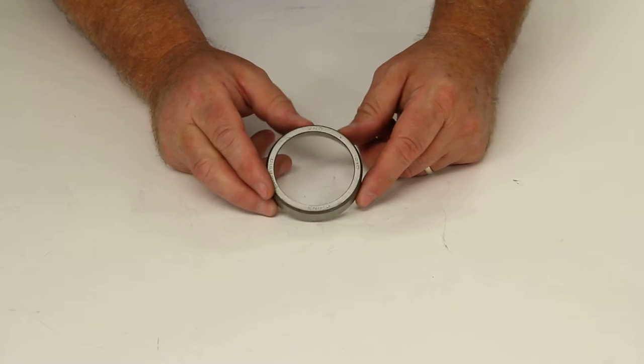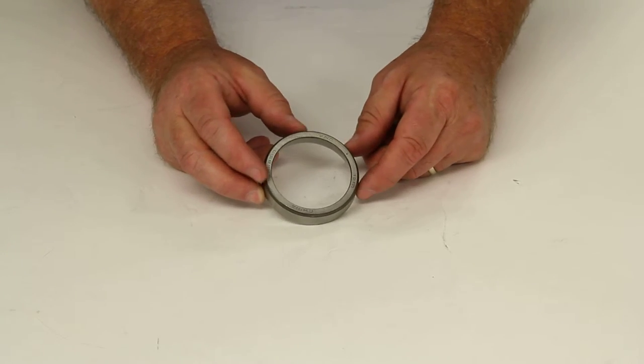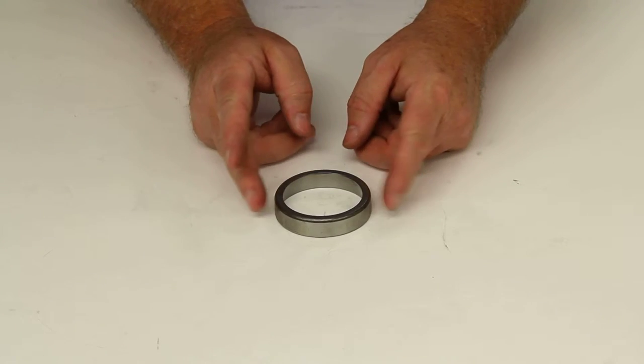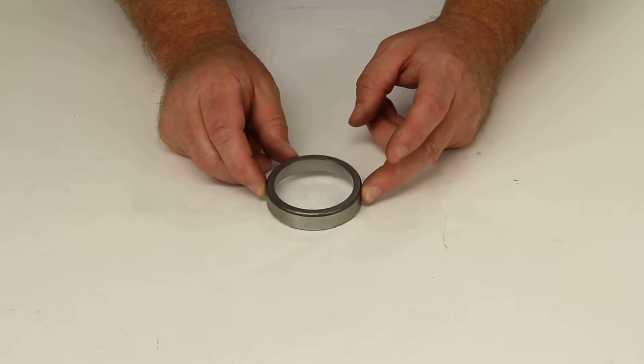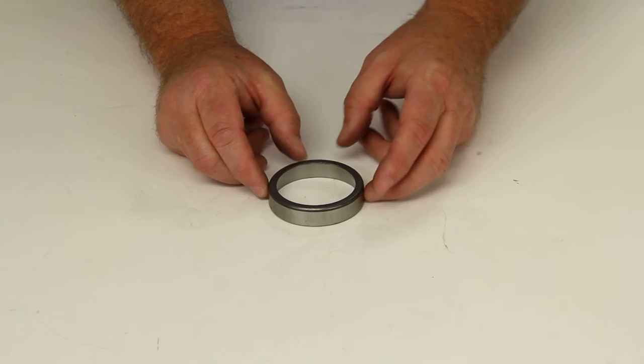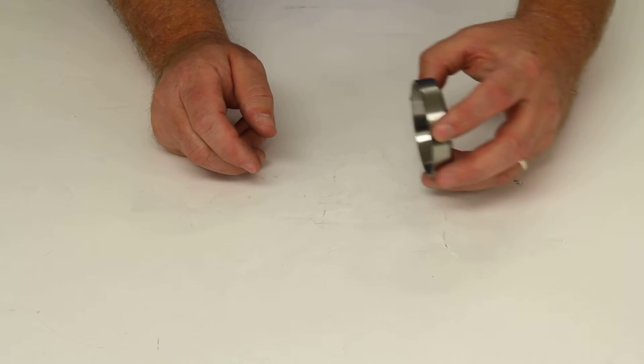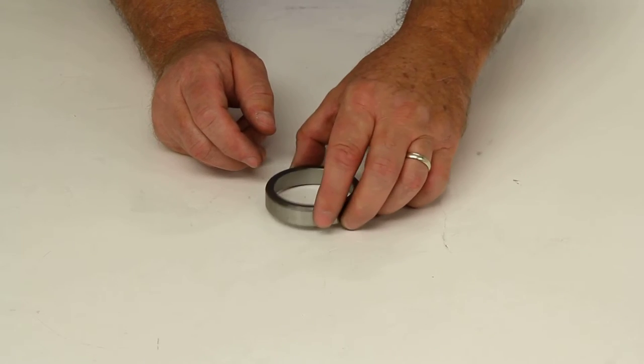The most critical thing to remember on this is the outer diameter measurement. That's very important - it's measured in thousandths of an inch, and it has to be correct because this part is actually pressed into the hub assembly.